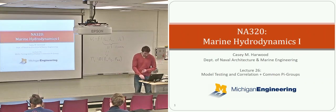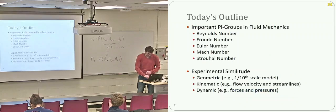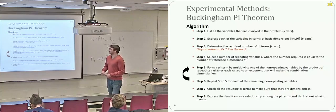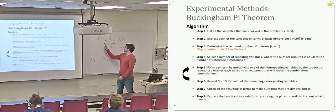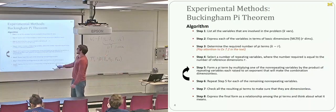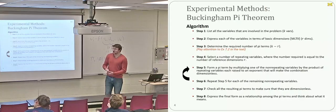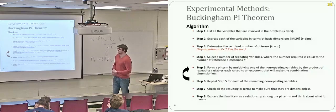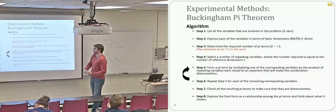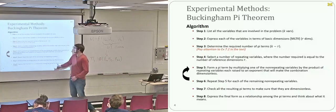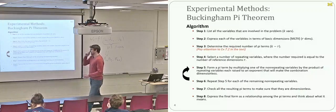Those two considerations are what make experiments easier to run and make results more generally applicable, allowing us to do model testing. To review: the Buckingham Pi theorem begins by listing all the variables in your problem — this requires some understanding of the physics. You don't need deep understanding of every variable, just list them out. Then expand them in terms of basic dimensions — mass, length, time, temperature — count those up, label that r. The theorem tells us we can get k minus r dimensionless pi terms.